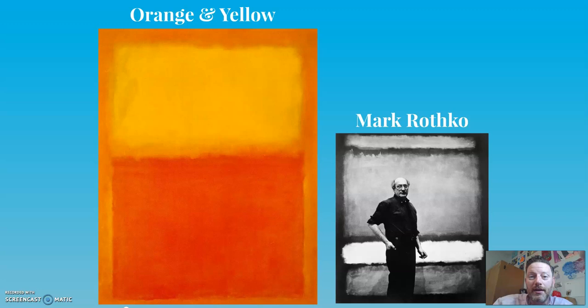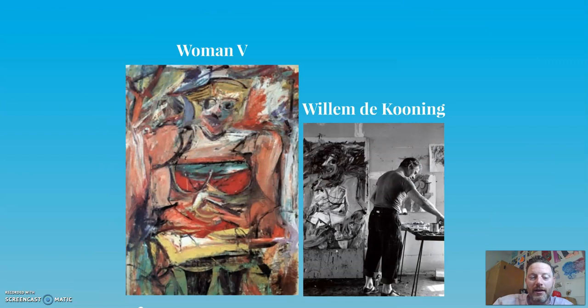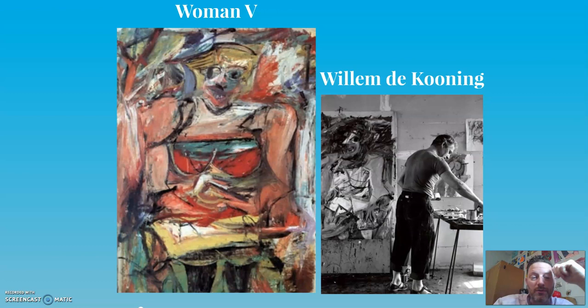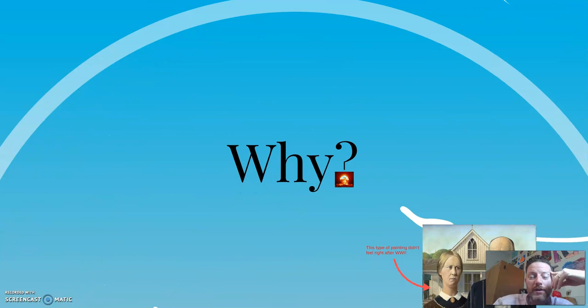Rothko thought if people really looked at his work, it'd be like music — it'd make you cry. And that is the idea: we're trying to make some kind of idea or feeling get across to the person viewing this. When you make your artwork, same thing. A little more literal — you can actually see the woman there. So why are they doing this? Why are they making abstract art?